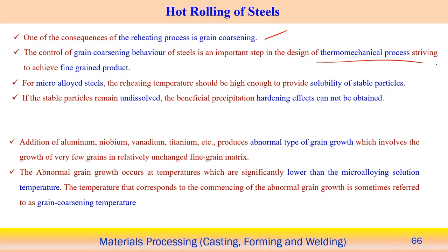Hot rolling involves performing the rolling operation at relatively high temperature. During the reheating process, grain coarsening occurs — heating the sample facilitates grain growth. Control of grain coarsening behavior is very important in the design of the thermomechanical process to produce a fine-grain product. There is always a tendency to form coarse grains during hot rolling operations of steel, but coarse grains do not help achieve the fine or balanced properties needed, so we always try to produce a fine grain structure.